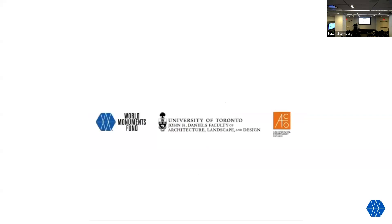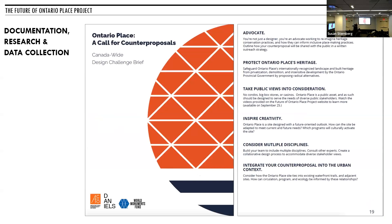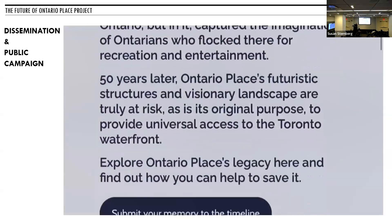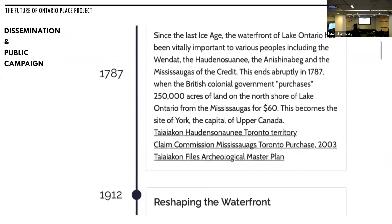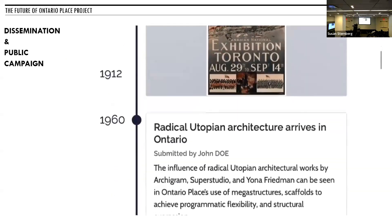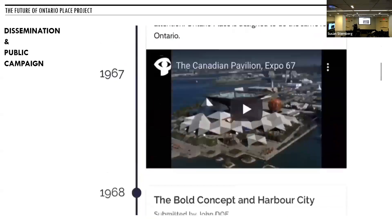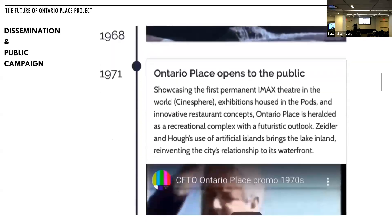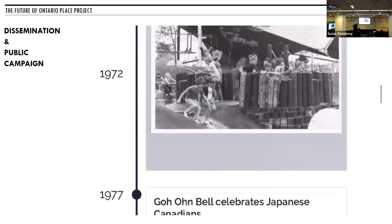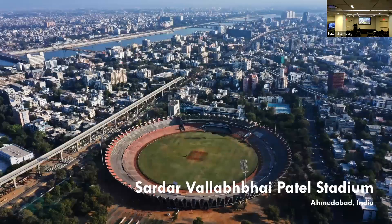We also did a call for counter-proposals, engaging all schools of architecture in Canada — asking students of architecture, landscape architecture, urban design, and urban planning to bring ideas to redevelop Ontario Place while preserving what makes it significant: its landscape, architecture, and publicness. We created an online platform called 'Future of Ontario Place' where all the research, site analysis, and a historical timeline are captured and made publicly accessible.